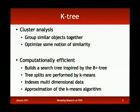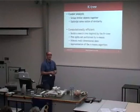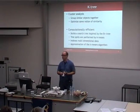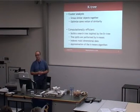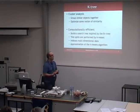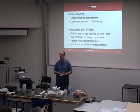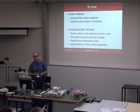The K-Tree algorithm is a scalable approach to clustering data. You don't know what's in the data — you want to find something interesting — so the way you do this is you group similar objects together and optimize some sort of similarity measure. What's interesting about the K-Tree is it's fairly computationally efficient, inspired by the B-plus tree. These data structures are used in file systems and databases. The difference is it's multidimensional, whereas a B-tree is only one-dimensional. It uses the popular K-means algorithm to perform splits in the tree, because it's harder to say where the middle is with multidimensional data.